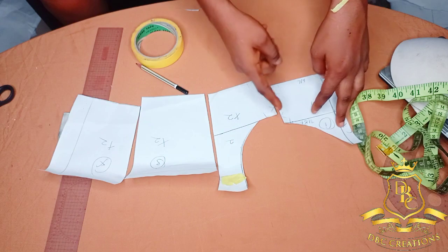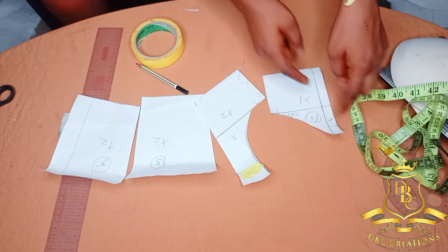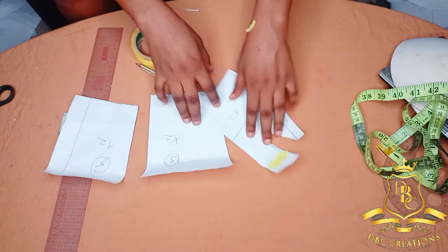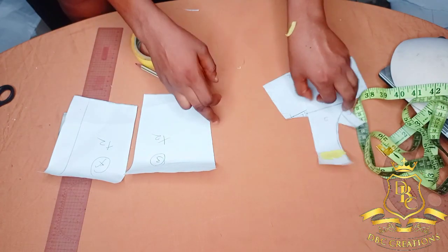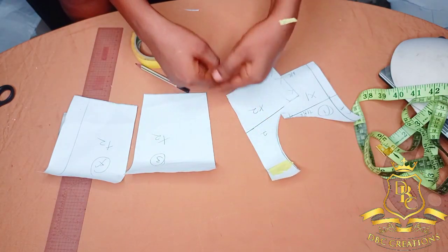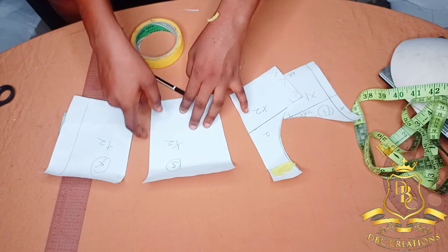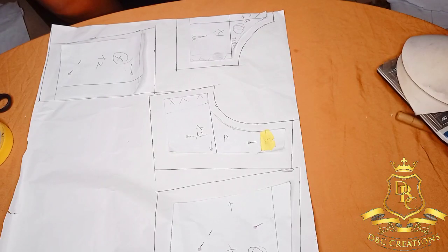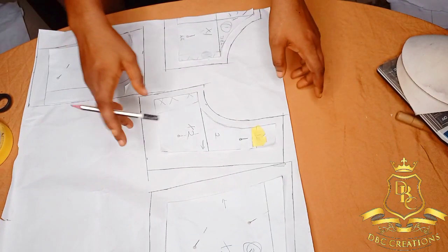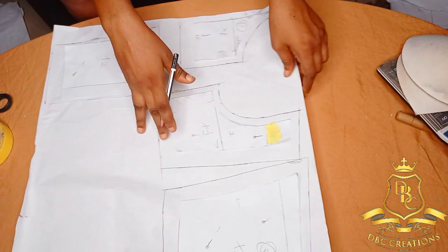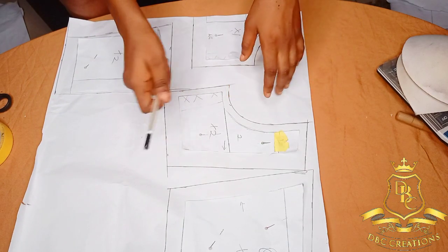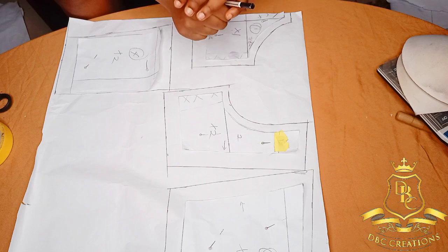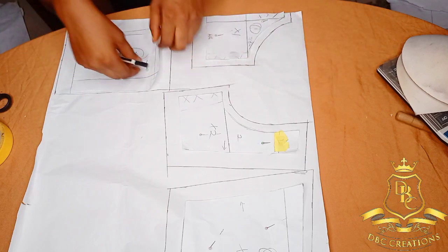So the next step is for me to add my necessary seam allowances: my half inch up here, half inch here, half inch here. I'm not going to add any half inch here because it's going to be unfold. Then I'm going to add my side seam, I'm going to add one inch. Then on the, that half inch I have already added my zip allowance here. So I'm sure adding my necessary seam allowances to my pattern.